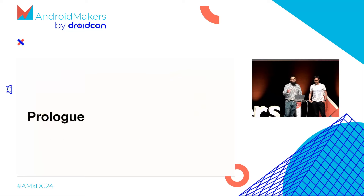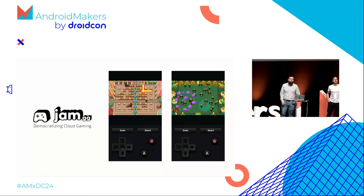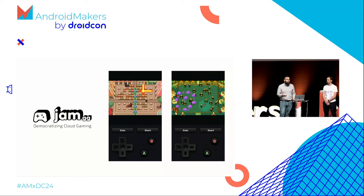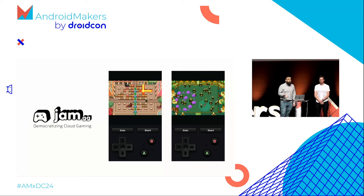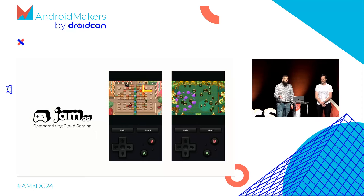So let's move to our prologue and explain the context of this talk. Jam is a company that's basically a game streaming technology provider — a SaaS model. We take retro or modern games, make them run in the cloud, and send a video and audio stream to devices so you can play those games. Those devices are generally web devices, but we also support mobile platforms — specifically both Android and iOS via Compose Multiplatform.